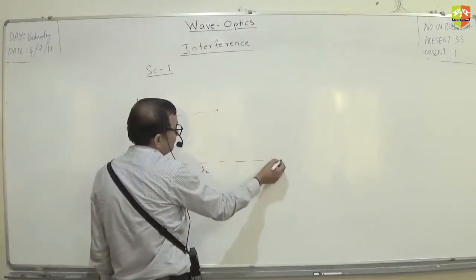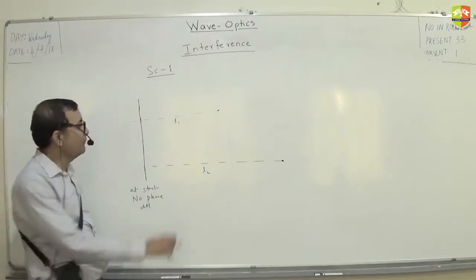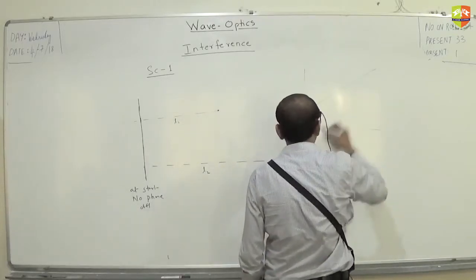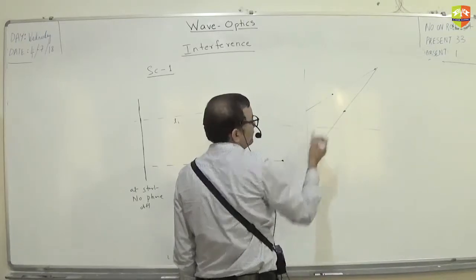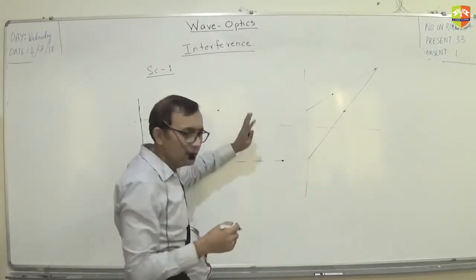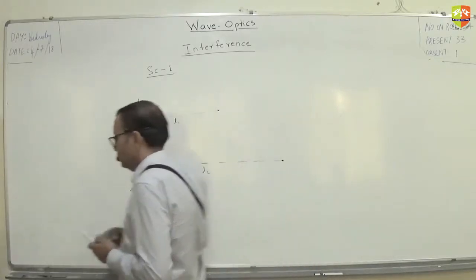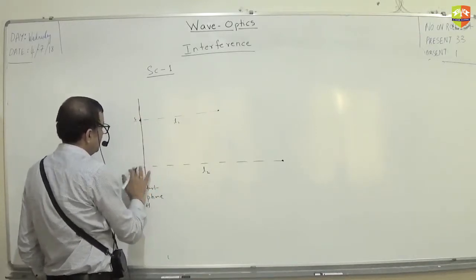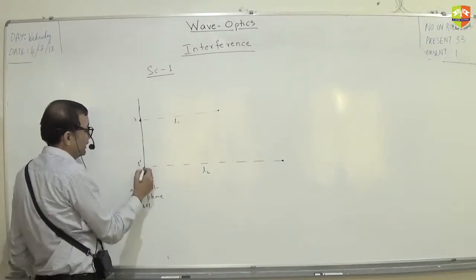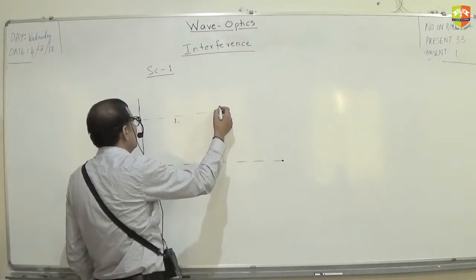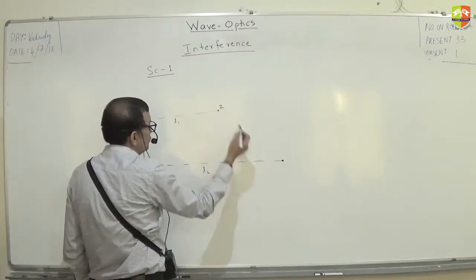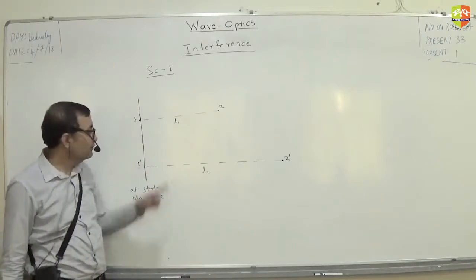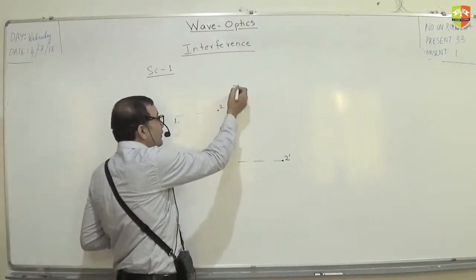They both meet. I'm drawing it as a straight line for convenience. So when these two waves start — one and one-dash — there is no phase difference. You have to find the phase difference when one wave reaches point 2 and the other reaches point 2-dash, in terms of L1, L2, and wavelength lambda.